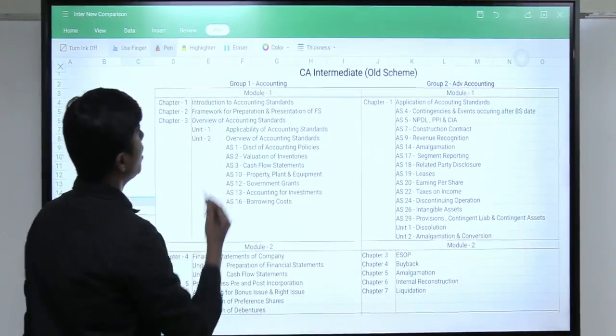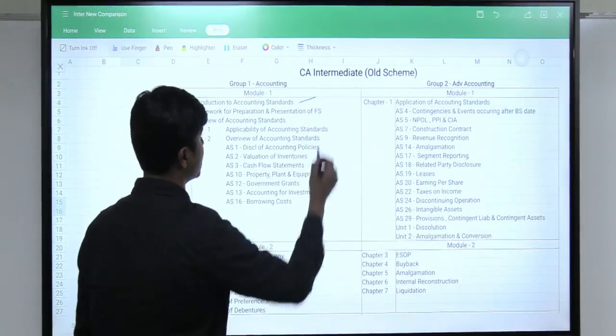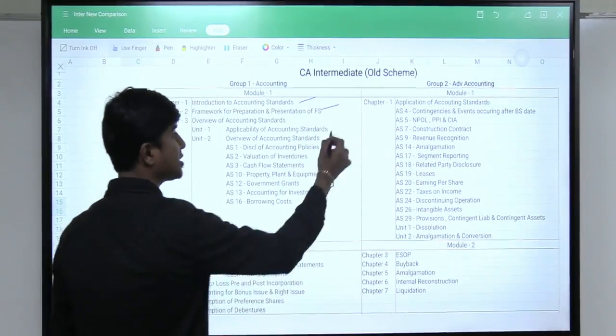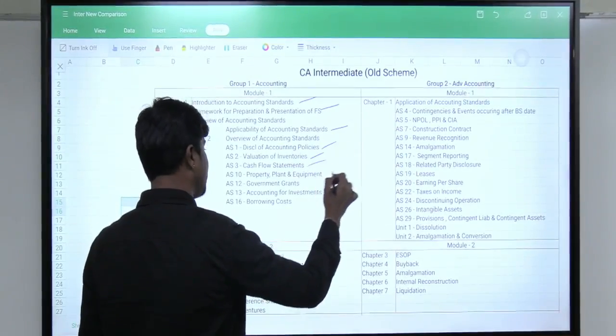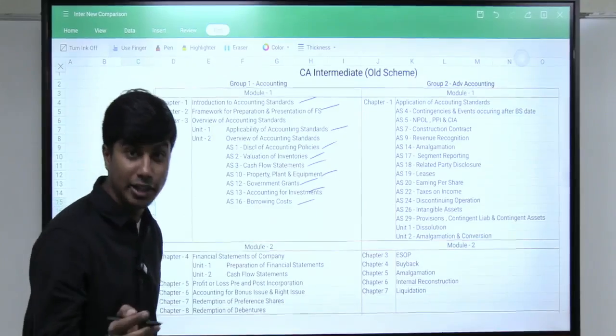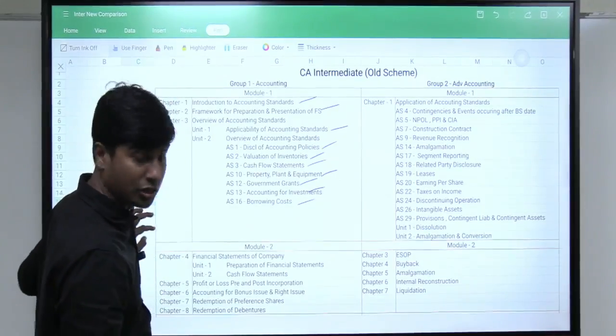Under our old scheme, what are the topics that we had relating to introduction to accounting standards, preparation of financial statements, applicability of accounting standards, AS 1, 2, 3, 10, 12, 13, 16. All of this will continue to be there in your advanced accounting under new scheme as well.